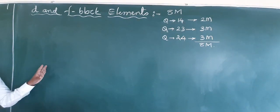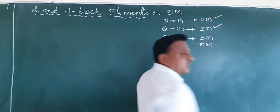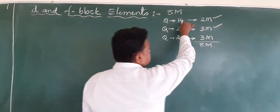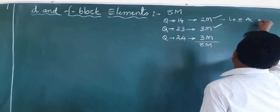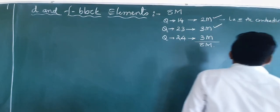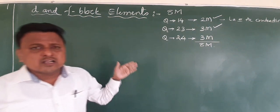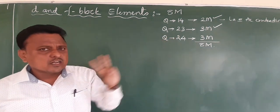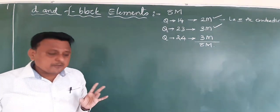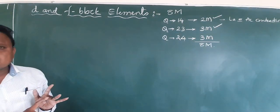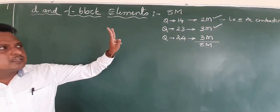According to our blueprint and NCERT syllabus, we already know 2 questions. Question number 14 is regarding either lanthanide contraction or actinide contraction, or the difference between lanthanides and actinoids. There are 3 possible questions here. This is a compulsory 2-mark question — either lanthanide contraction, actinide contraction, or the difference between lanthanides and actinoids.